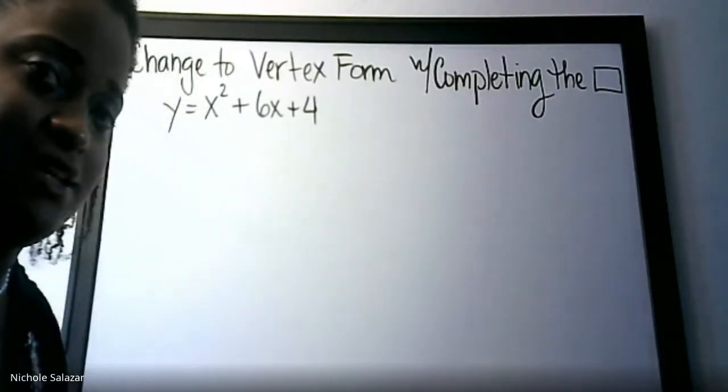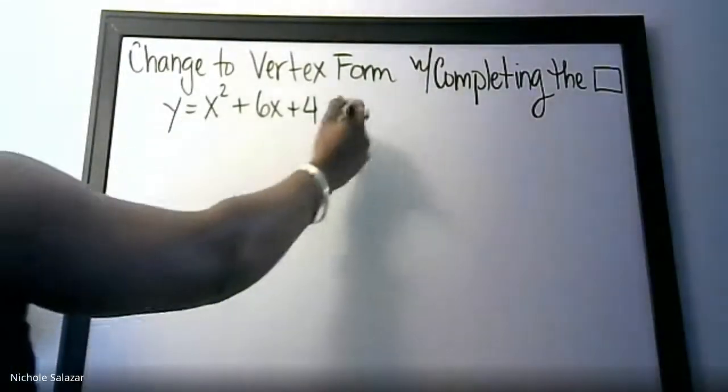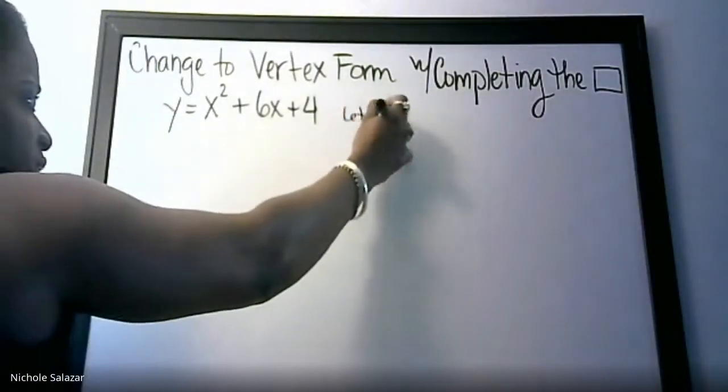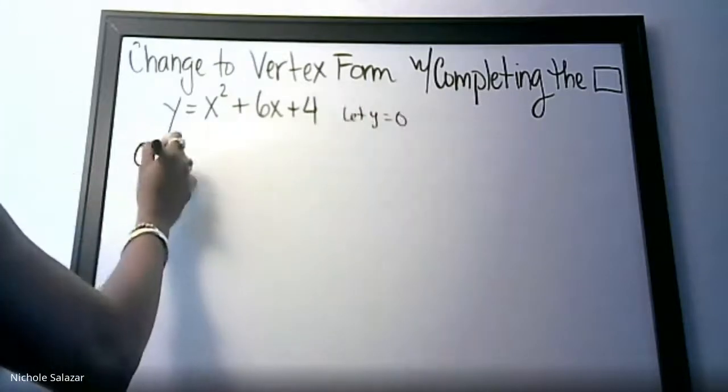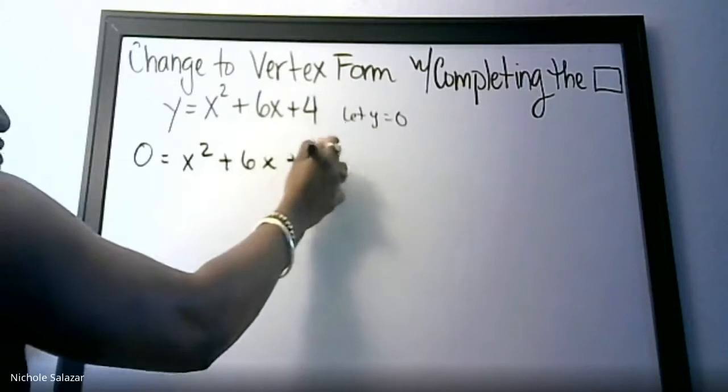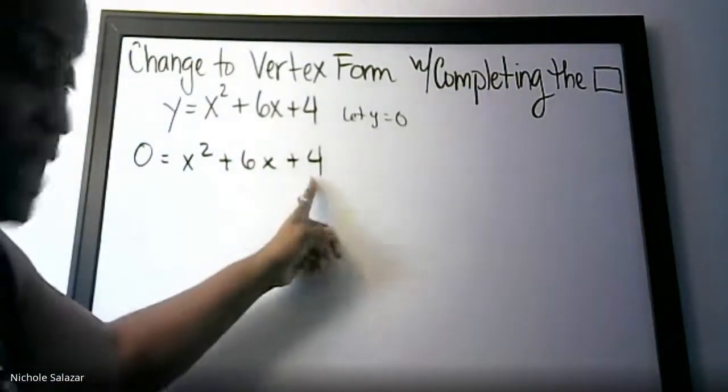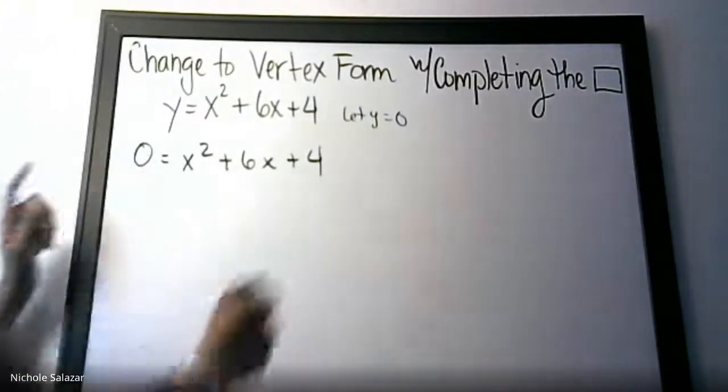The first thing I'm going to do is let y equal 0, and I guess you can write that down if it makes you feel good. We'll write 0 equals x squared plus 6x plus 4. Now the next step would be to move that 4 over here, so we'll do the opposite on both sides.